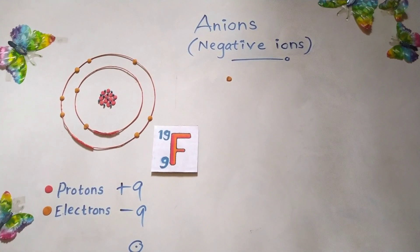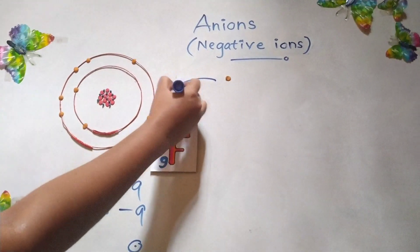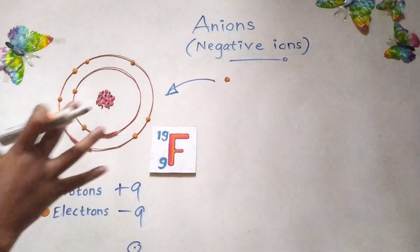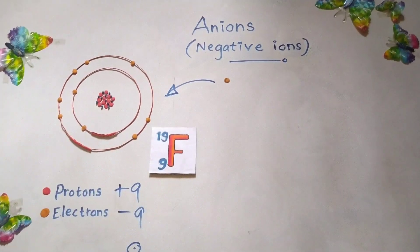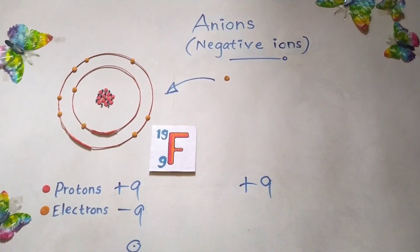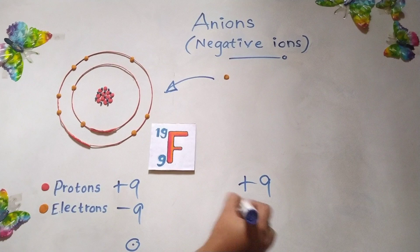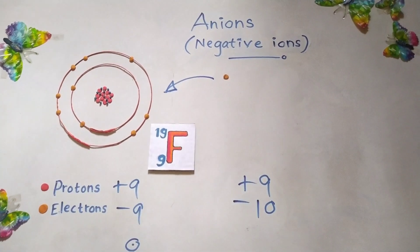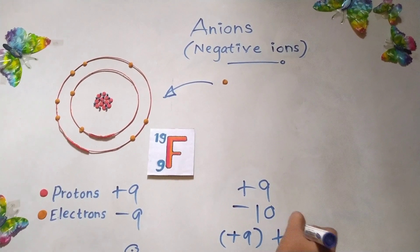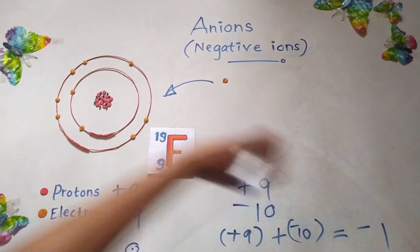Now, due to some reason, this fluorine atom gains an electron. Let's imagine that this fluorine atom gains one electron. The number of protons will not change — that will remain as positive 9. But the number of electrons — now it has already gained one electron — so it is becoming negative 10. When you are calculating the final charge, that will be positive 9 plus negative 10, and the final charge will be negative 1.